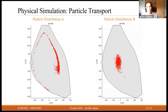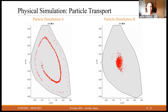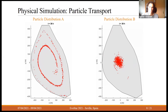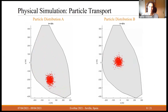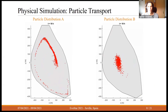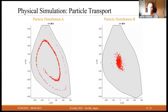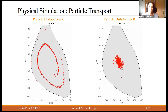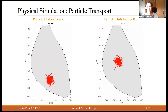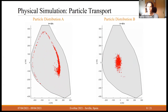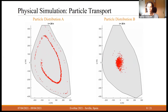We use two different particle distributions. In particle distribution A, particles are initialized near the edge of the lake, so they move faster and spread a lot more, forming thin lines. In particle distribution B, they are initialized near the center of the vortex, so they move slower and barely spread.